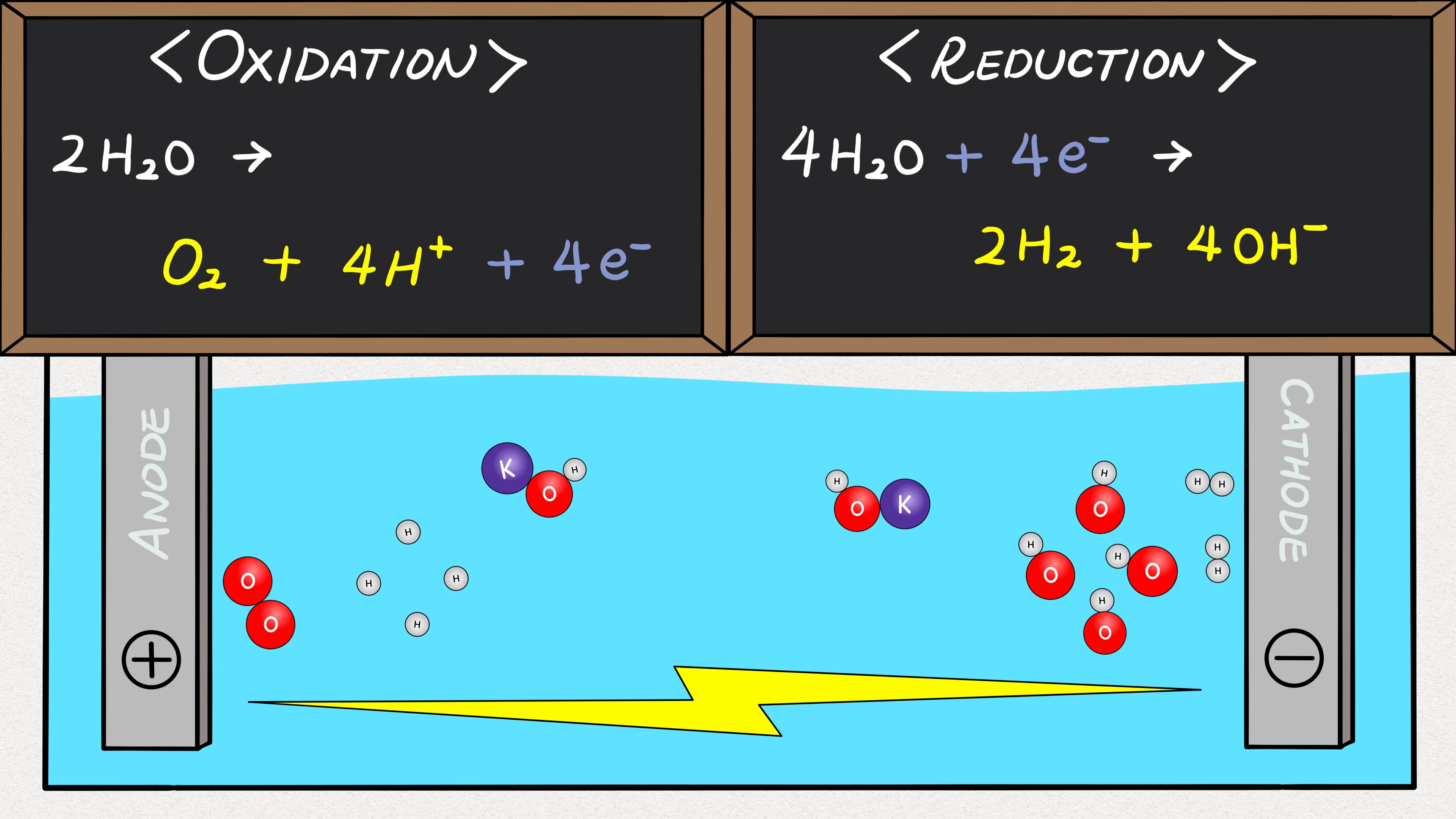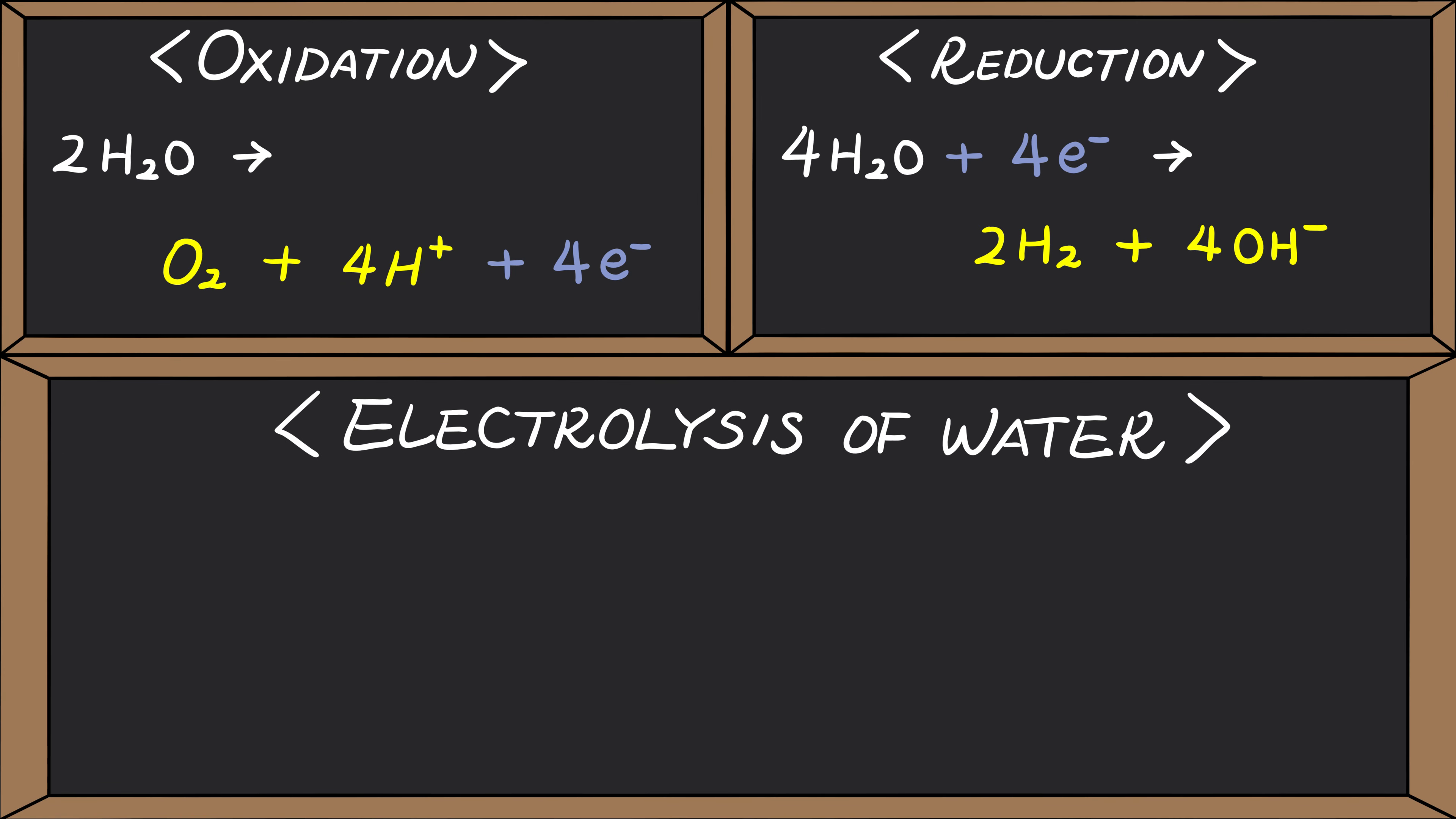Together with reduction, they complete the reaction caused by running electricity through water. Let's add the two equations to see the full picture. The four electrons cancel each other out and the four hydroxyl ions and four positively charged hydrogen can be rewritten as four H2Os.